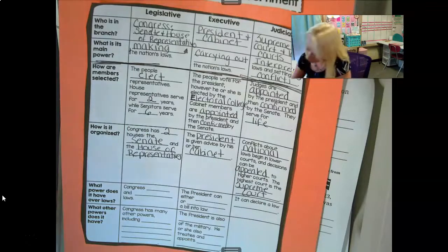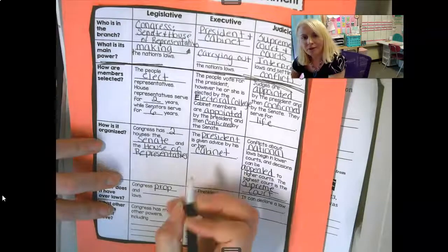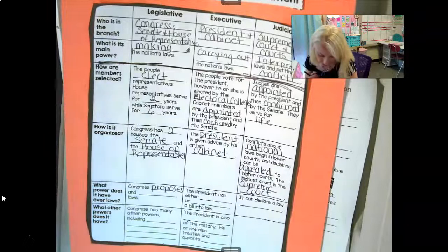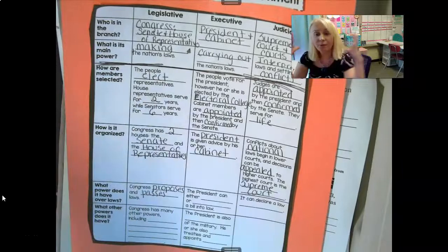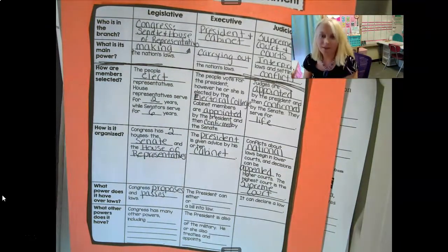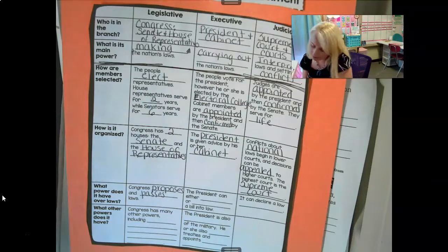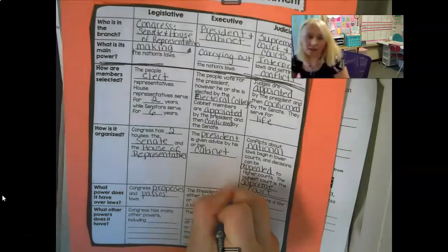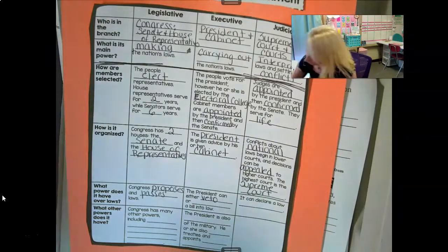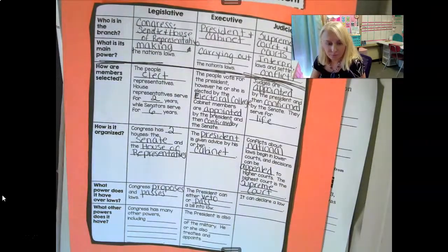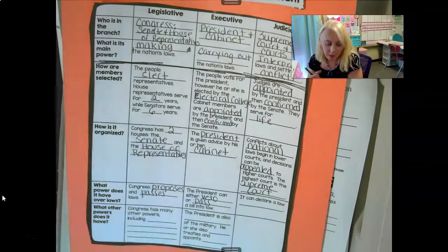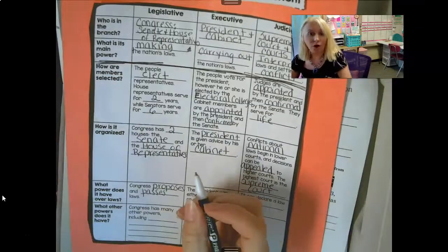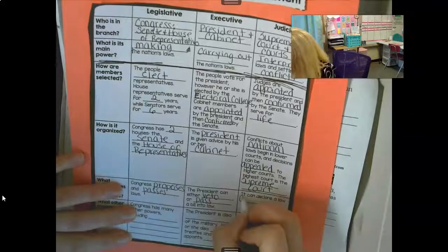What power does it have over laws? Congress proposes — meaning they suggest — and passes laws. They come up with the idea of a law and pass it. Then the president is going to enforce this law, and he can get the law and either sign it or say no — veto it. Or pass the bill into law. So the president gives either a yes or no on the law. However, the judicial branch can step in if they find the law violates the Constitution and therefore our rights as American citizens — it can declare a law unconstitutional.